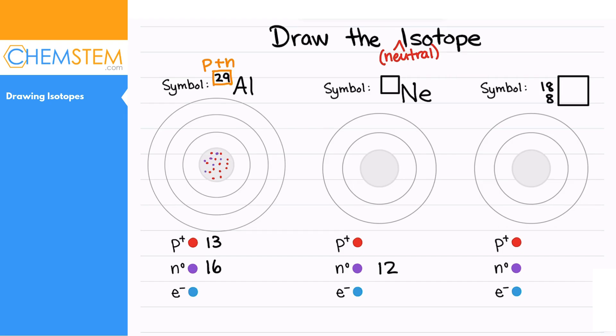So there are 16 neutrons in the nucleus: 1, 2, 3, 4, 5, 6, 7, 8, 9, 10, 11, 12, 13, 14, 15, 16. Now this is neutral, so we're going to draw in also 13 electrons. Remember that if something is neutral, protons and electrons are equal.